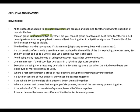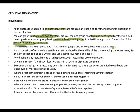You can group beat 1 and 2 together, and you can group beat 3 and 4 together in a 4/4 time signature. This is because the middle of the 4/4 bar must always be visible — the middle beat must always be visible. The third beat may be syncopated if it is a minim. Syncopation simply means displacing a strong beat with a weak beat.